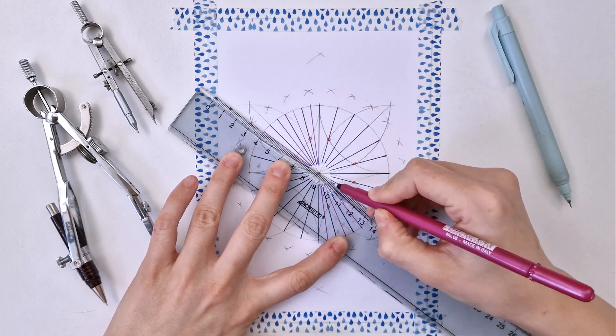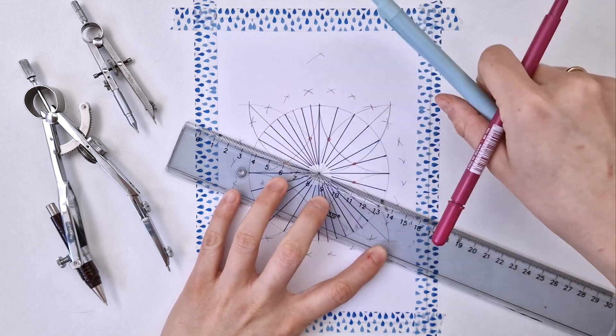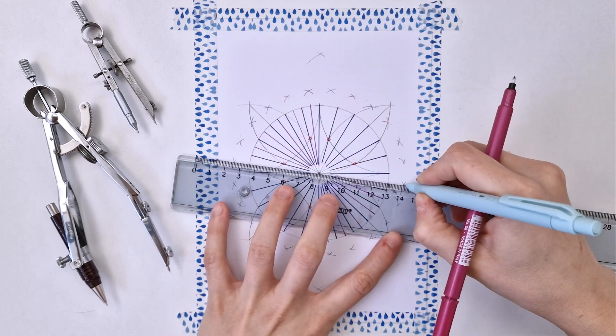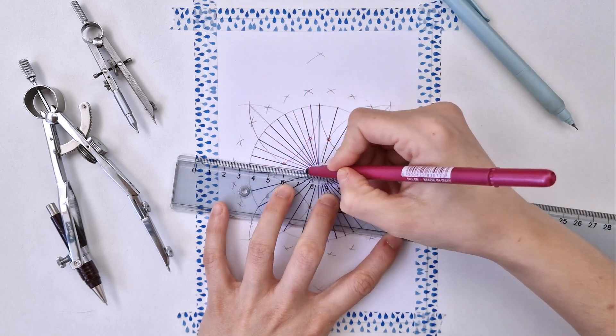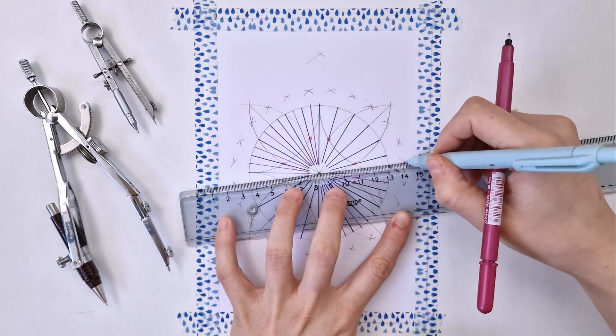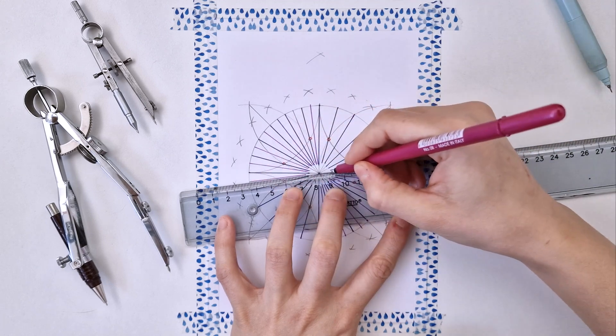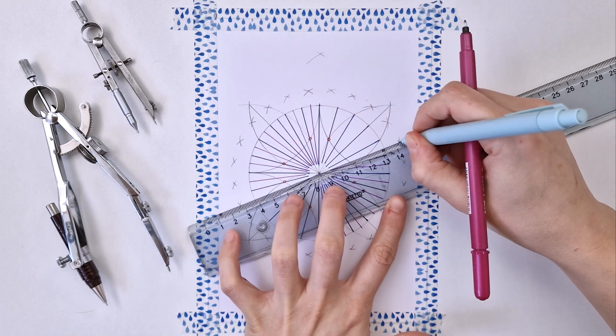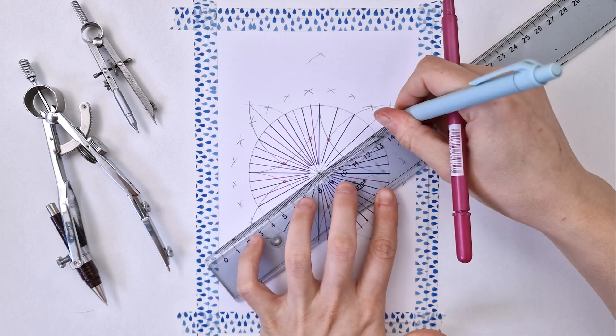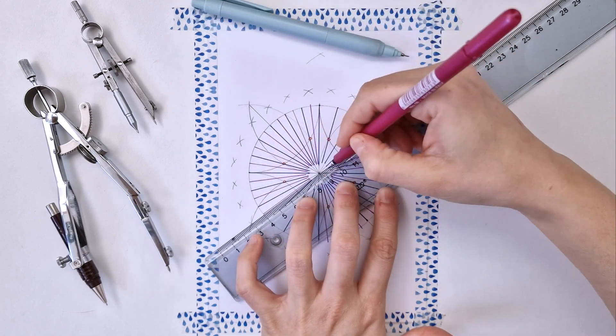So yeah, this is what I'm doing here. I'm adding the lines, and as you can see, I'm not going through the center even though my line aligns through the center, but I'm not doing that because it becomes too crowded, too messy. So I'm just keeping it as clean as possible, and I stop a couple of millimeters before and start a couple of millimeters after the center point.